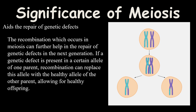The third significance is that meiosis is involved in the repair of genetic defects. If there is a defect in the genes, through recombination occurring in prophase 1 of meiosis 1, the genetic defect can be replaced. The recombination which occurs in meiosis can repair genetic defects in the next generation. If a genetic defect is present in a certain allele of one parent, recombination can replace this allele with a healthy allele of the other parent, allowing for healthy offspring.